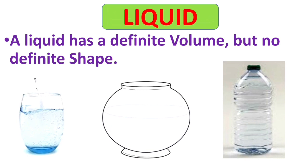Next is liquid. A liquid has definite volume but no definite shape. They take the shape of the container in which they are poured, like water, juice, milk, etc.